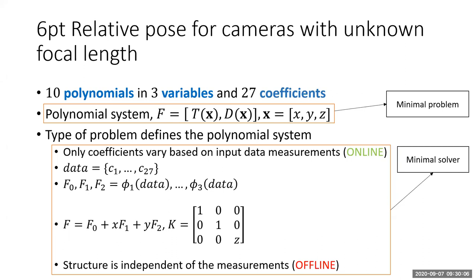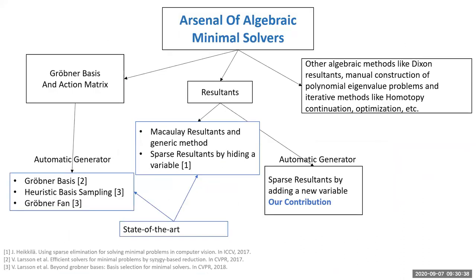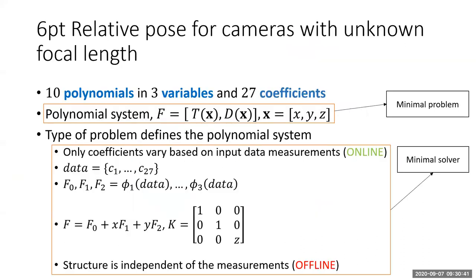The polynomials must be in symbolic form, with symbols c1 to c27. Software like Mathematica, MATLAB, and Maple are excellent at performing symbolic calculations, though they can be time-consuming and memory-intensive. Because it's the offline stage, we do not have to worry about computation time since this stage is done only once. We then look at the various tools available for solving such problems.